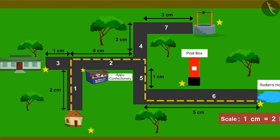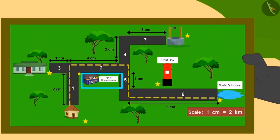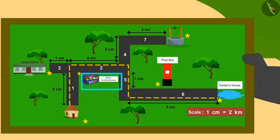Golu was to go right on road number 2 from Appu's confectionery. But he took a left turn from Appu's shop, which was road number 3.